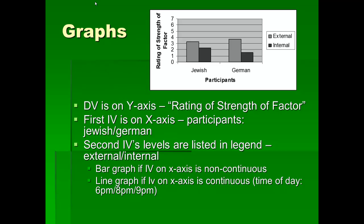The independent variable here is participants, and the levels of that are Jewish and German. You could also put two independent variables in one graph if the experiment has two IVs, and this one does. The levels of the second IV are listed in the legend — that's the little box that works as a key for the graph. Looking at the legend, one level is external and the other is internal — we're talking about attributions here.